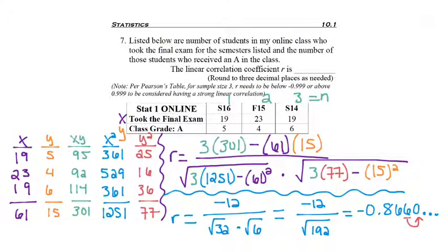So with rounding, I'm going to have a solution of negative .866, which although does feel pretty close to negative 1, with such a small sample size, it's technically not close enough to find a strong linear correlation. So the number of students that take the final exam has nothing to do with the number of students who receive an A in my online class. So is that good or bad for y'all?